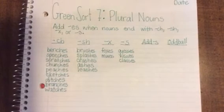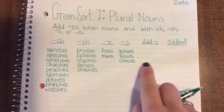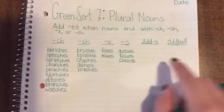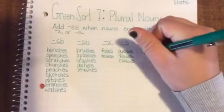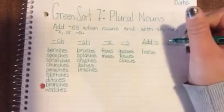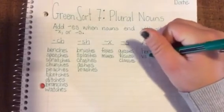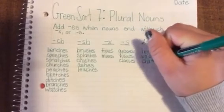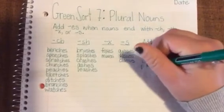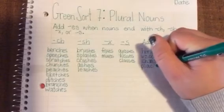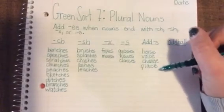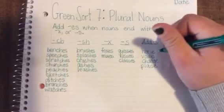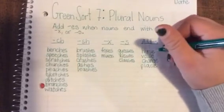All right, continuing on. I've also thrown in here four words that end with the magic E, like horse, voice, change, and place. Now, when we make these plural, they're still going to have the is sound at the end.